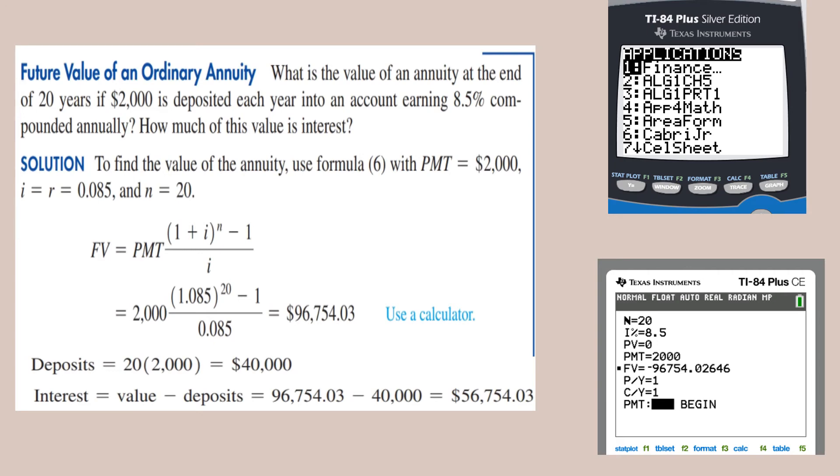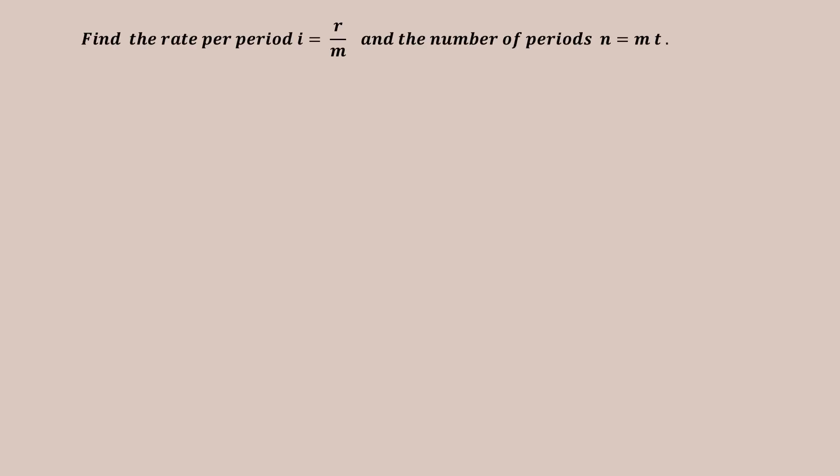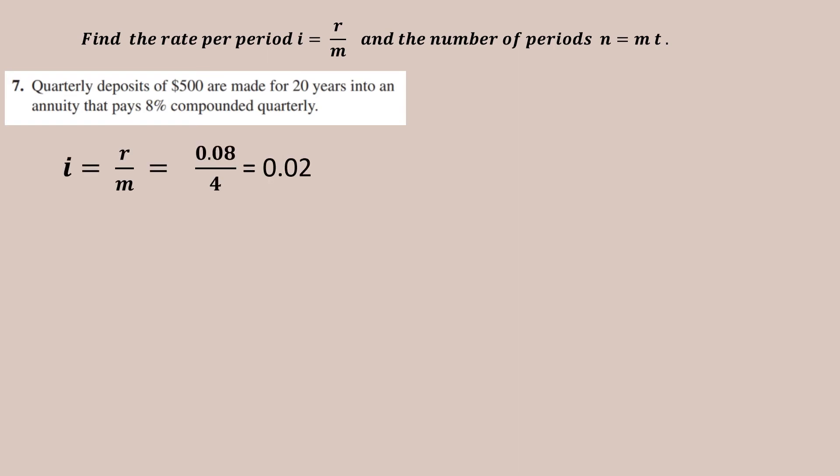Now to find the rate per period, we know that i = r/m, and also the number of periods n = m × t. So if quarterly deposits of $500 are made for 20 years that pays 8% compounded quarterly, then in this case my i will be r/m = 0.08/4, compounded quarterly, so the payment period is 4, and i is 0.02. And my n will be m × t; m is 4 and the time t is 20 years, so n will be 80.